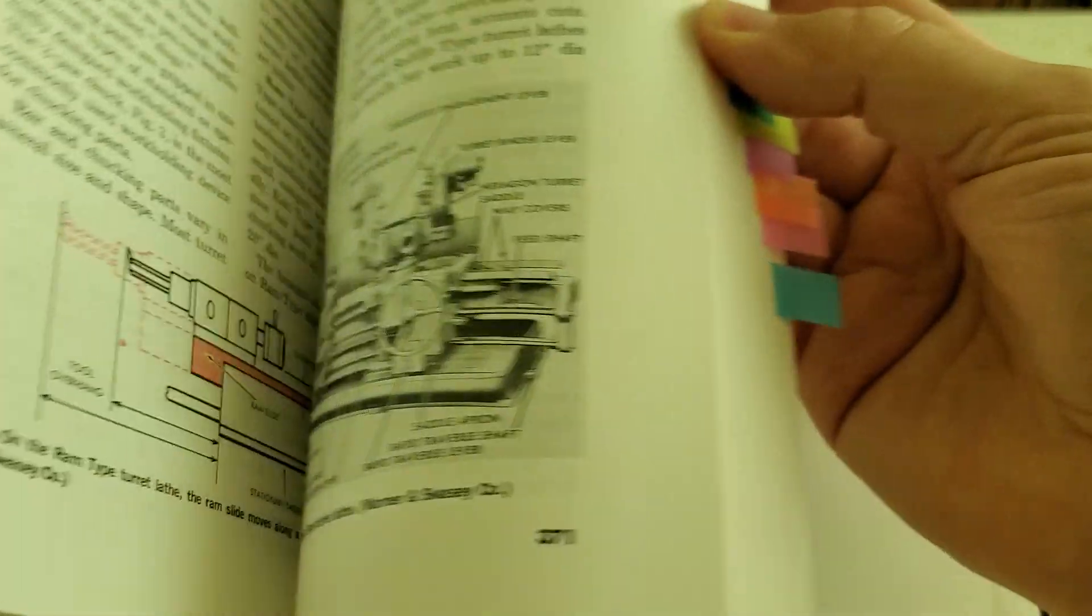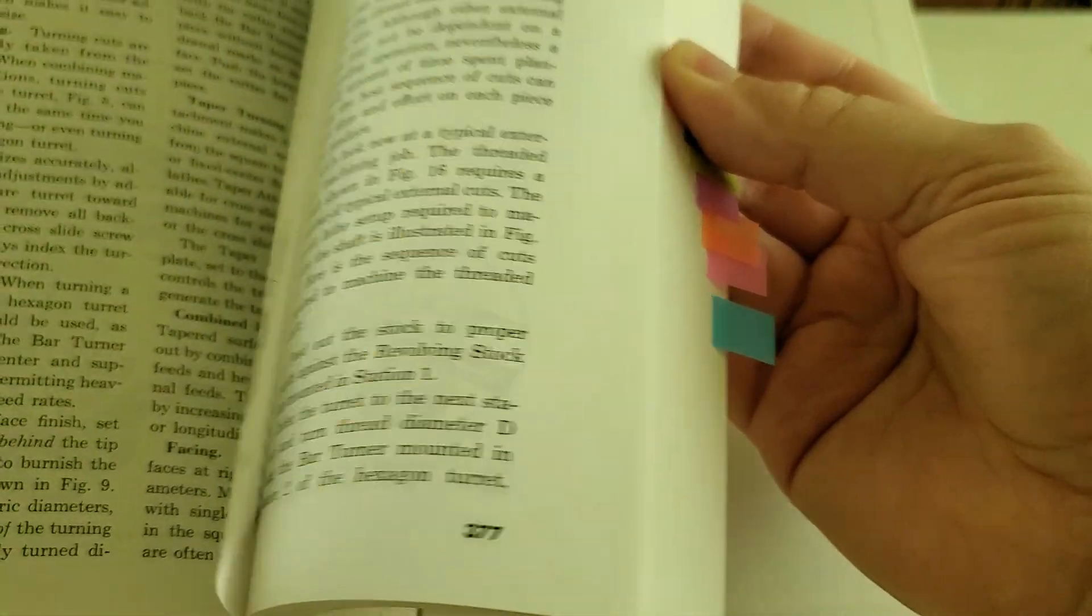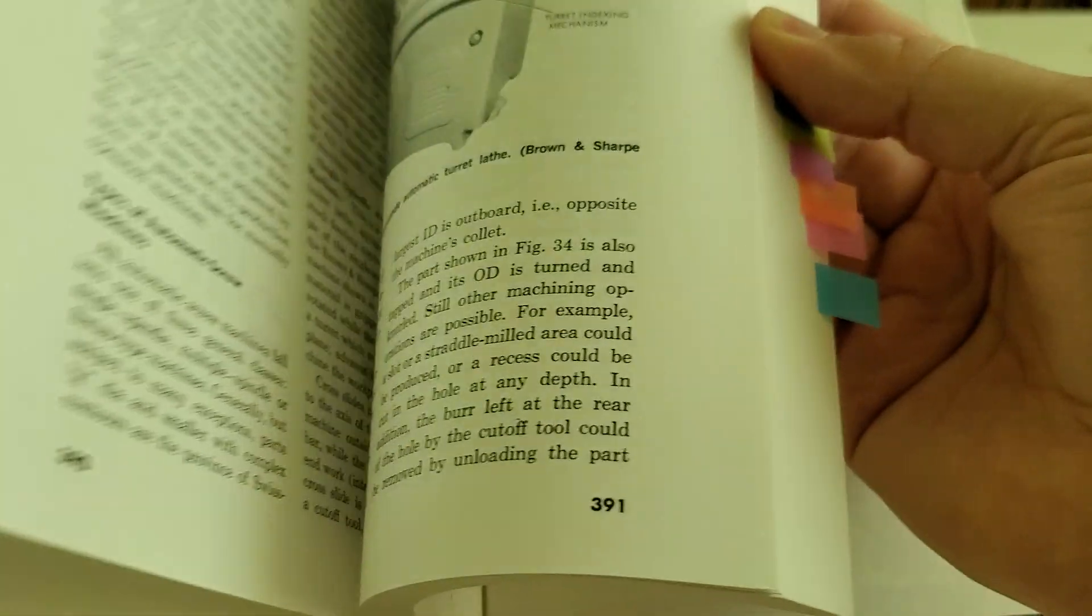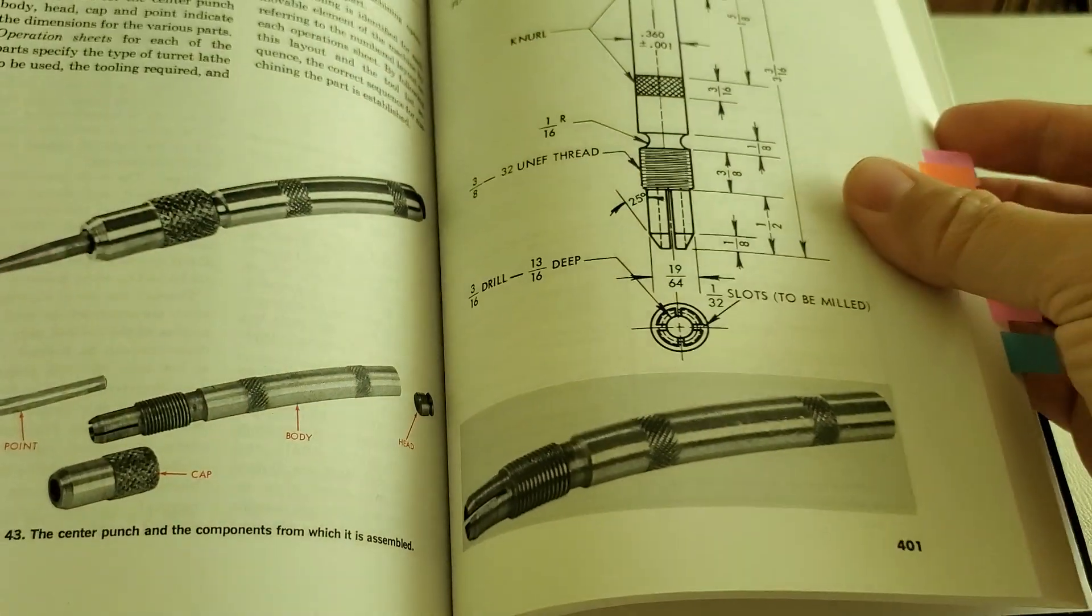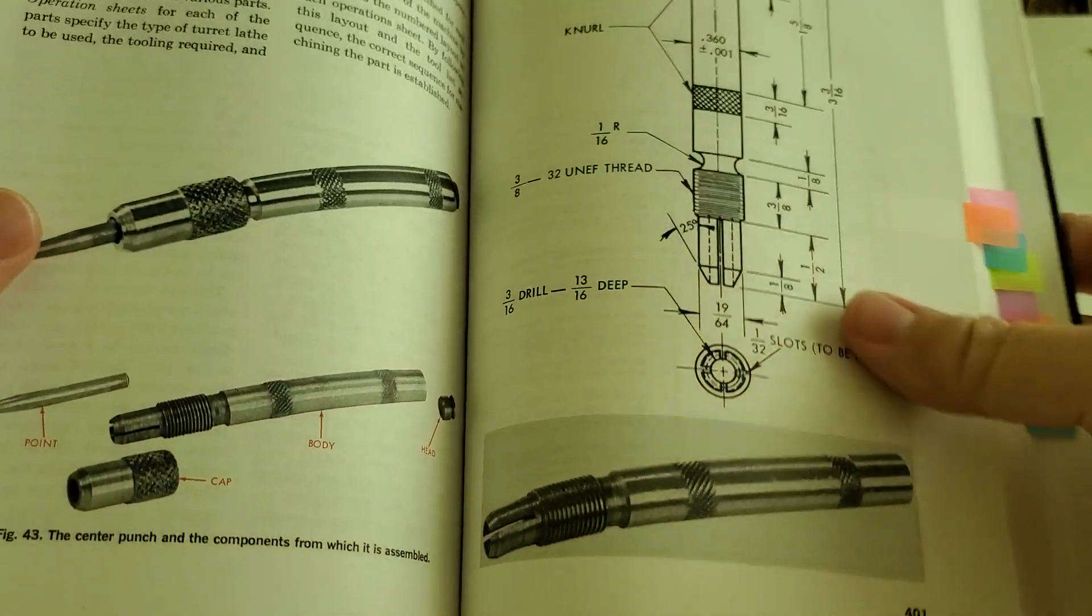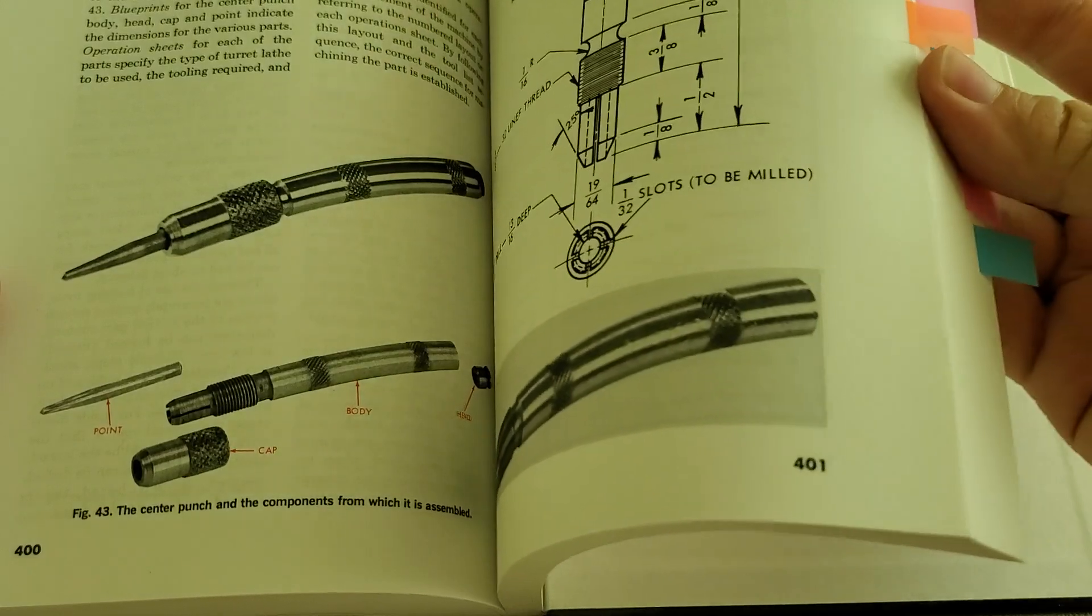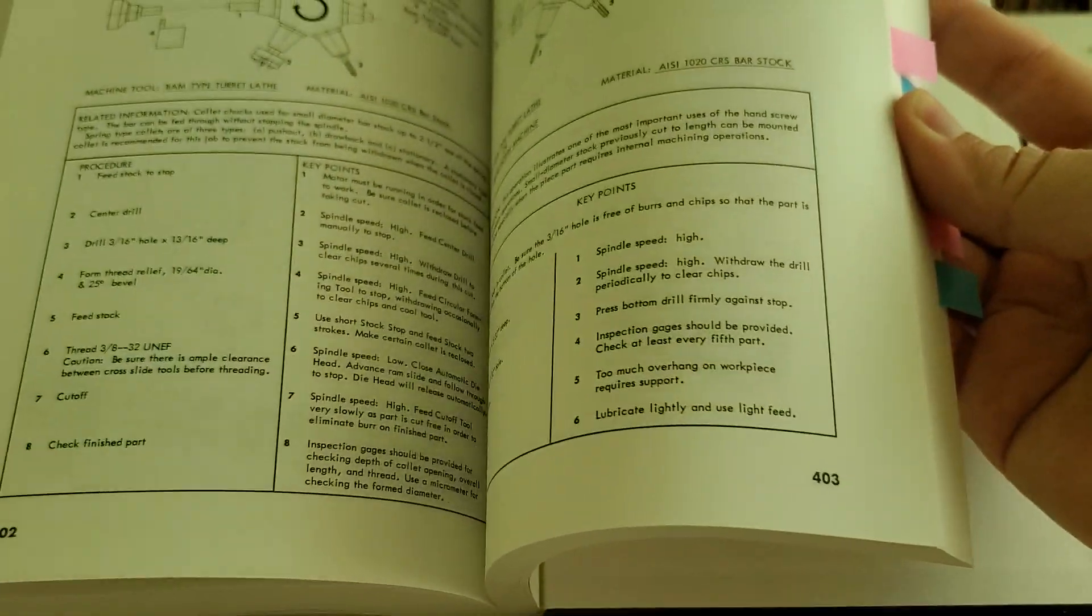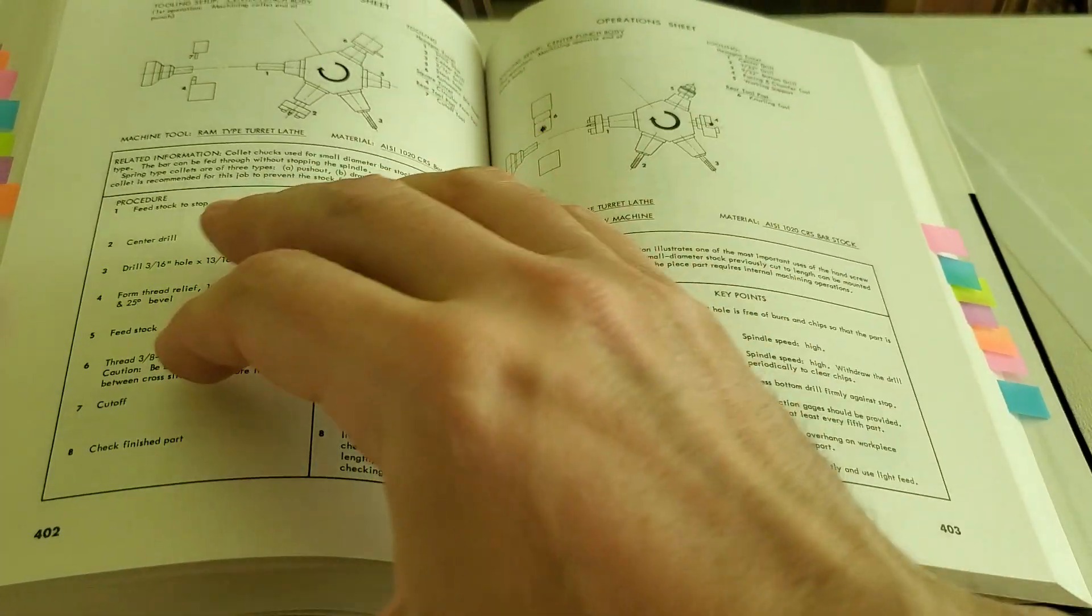Then it goes into production turning and talks about turret lathes and screw machines. And back here, there's actually a print for a project that you can do on a turret lathe. And it talks about the different operations that you would use to make that part.